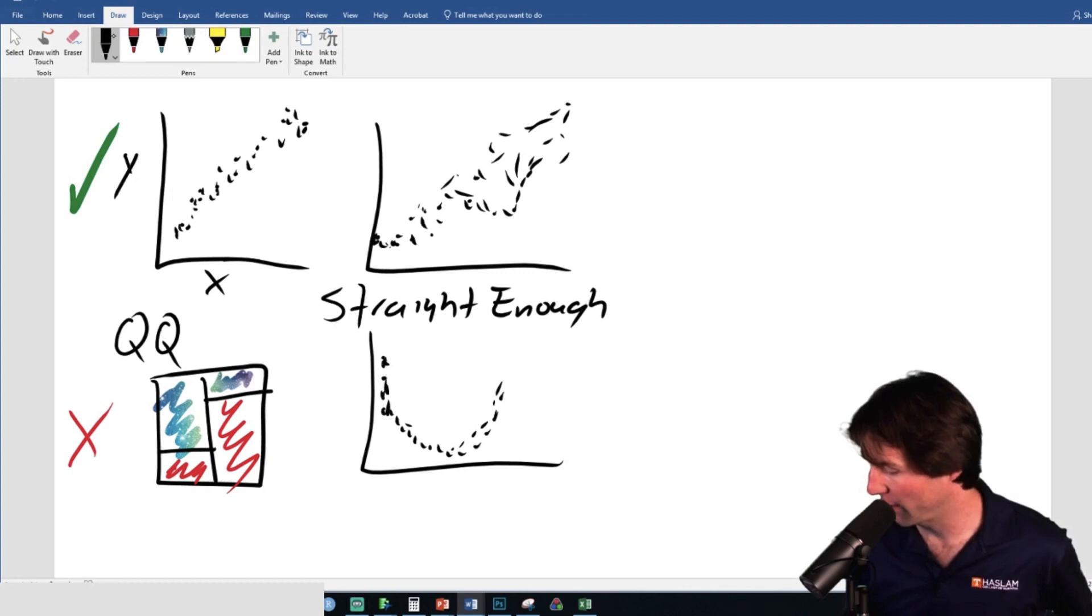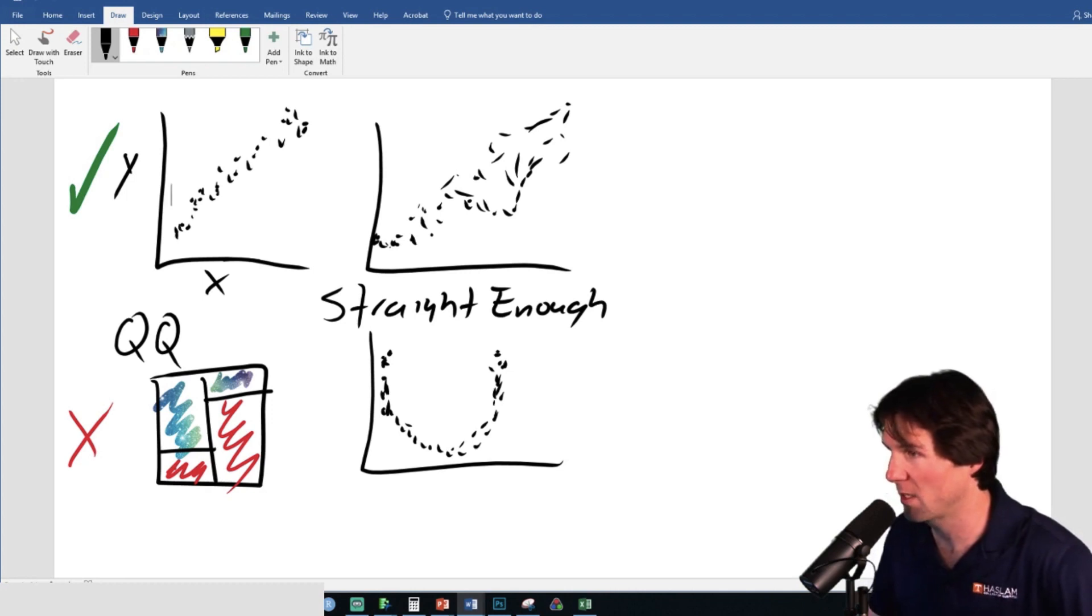What will the correlation on this graphic be very close to? The correlation on the bottom graphic will be very close to what? Straight enough means that a straight line well approximates it, Heidi. Great question.